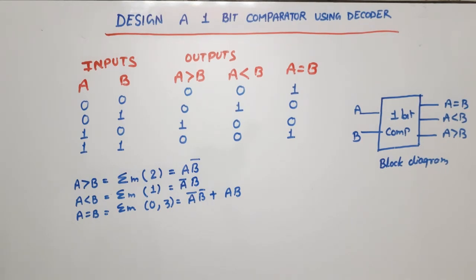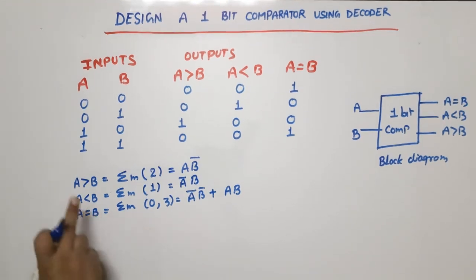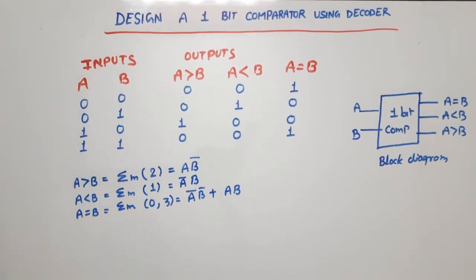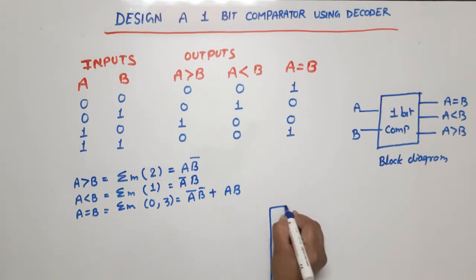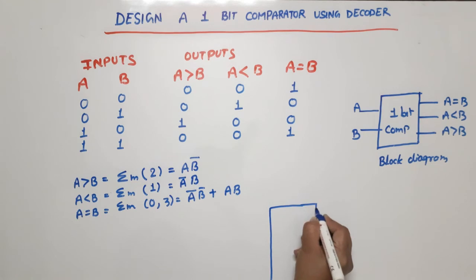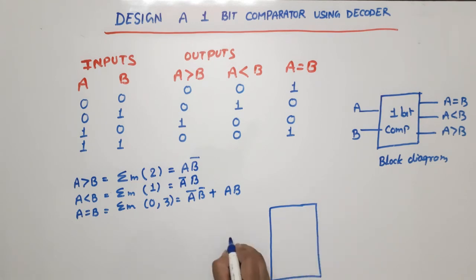Since we have two inputs and need to implement this with a decoder, we require a 2-to-4 decoder. So I have a 2-to-4 decoder here.